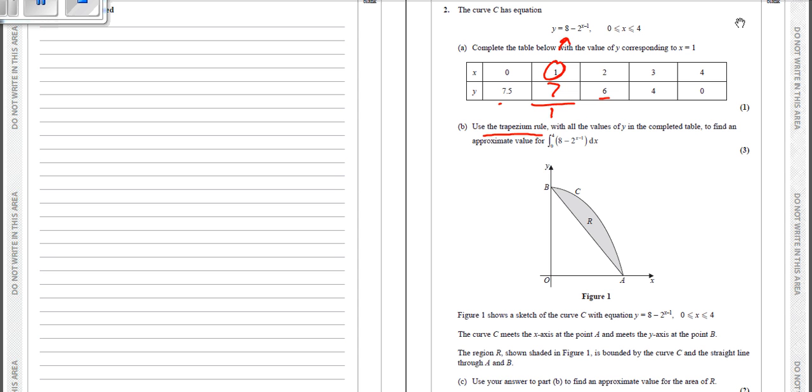Right, now use the trapezium rule with the values of Y in the completed table to find the approximate value for this. So, what we do for the trapezium rule. In the formula book, it says half H, squiggly brackets, Y0 plus Yn plus 2 lots of Y1 plus Y2 plus dot dot dot Yn minus 1. That should be N minus 1 then. There, another squiggly bracket.